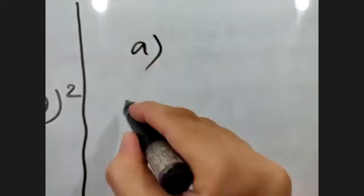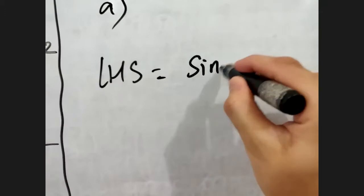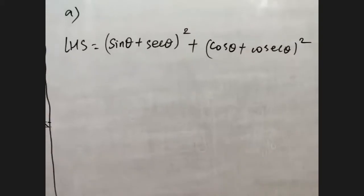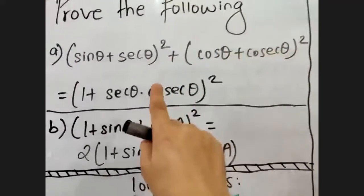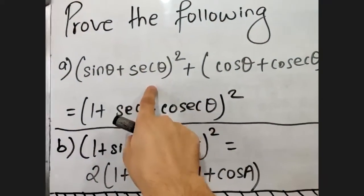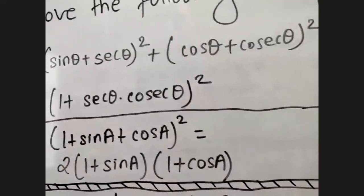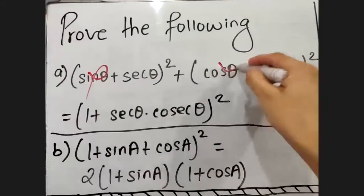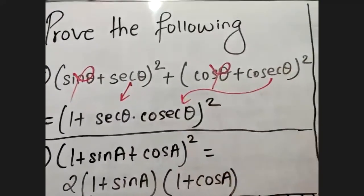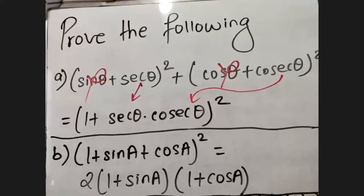This is a question of two marks. The left-hand side says: sine theta plus sec theta, all square, plus cos theta plus cosec theta, all square. For solving, let us look at the right-hand side first. On the right part we have sec theta and cos theta, and on the left part there is sine, sec, cos, and cosec. So the terms sine and cos are not needed in the right part — we have only sec and cosec there.